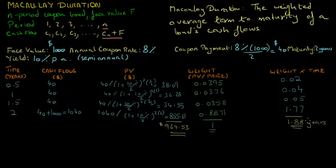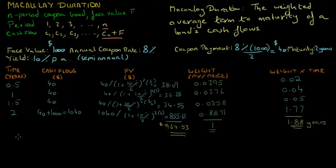Typically, bond traders use duration as a measure to approximate the change in bond price due to a change in interest rates. So in this example, if rates go up by 1%, the bond price is expected to come down by 1.88%. Note, however, that Macaulay Duration is not the best measure of a bond's price sensitivity — modified duration, which we will see in another video, is a better measure to approximate price changes. Macaulay Duration is better used to measure the weighted average term to maturity of a bond's cash flows.